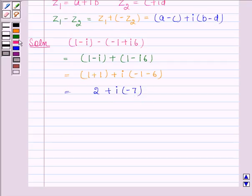And this is equal to 2 minus 7i. So we have expressed the given complex number in the form a plus ib. Here a is equal to 2 and b is equal to minus 7. This is our required answer.